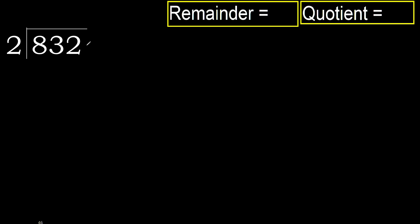832 divided by 2. 8 is not less, therefore with 8: 2 multiplied by which number is nearest to 8 but not greater? 2 multiplied by 5 is 10 — it's greater. Multiply by 4 is 8 — it's not greater.